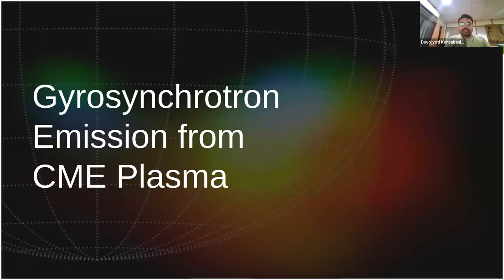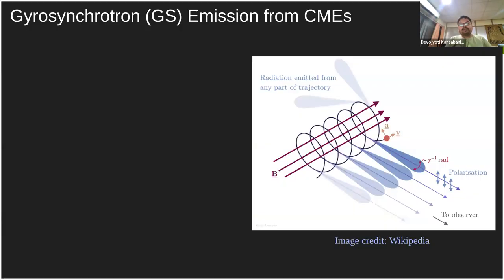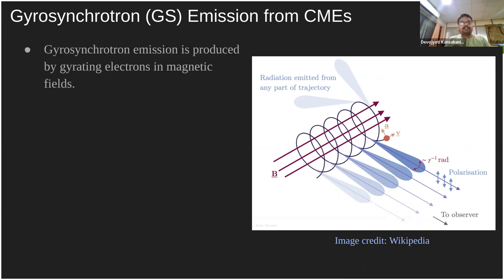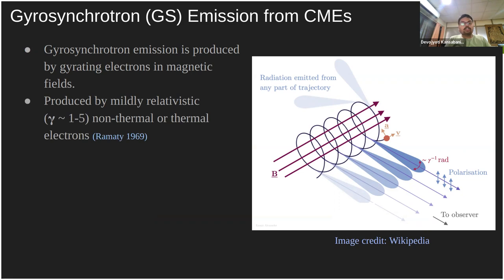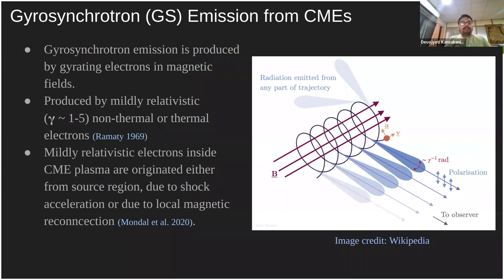In this talk, I will mainly focus on two methods: first, gyrosynchrotron emission to measure magnetic field strength of CMEs up to 10 solar radii, and then Faraday rotation measurements using background radio sources for the heliospheric domain. Gyrosynchrotron emissions are produced by mildly relativistic electrons gyrating in a magnetic field, with Lorentz factor of about 1 to 5. The source of these electrons can be nearby active regions, shock acceleration, or local magnetic reconnection inside the CME plasma.